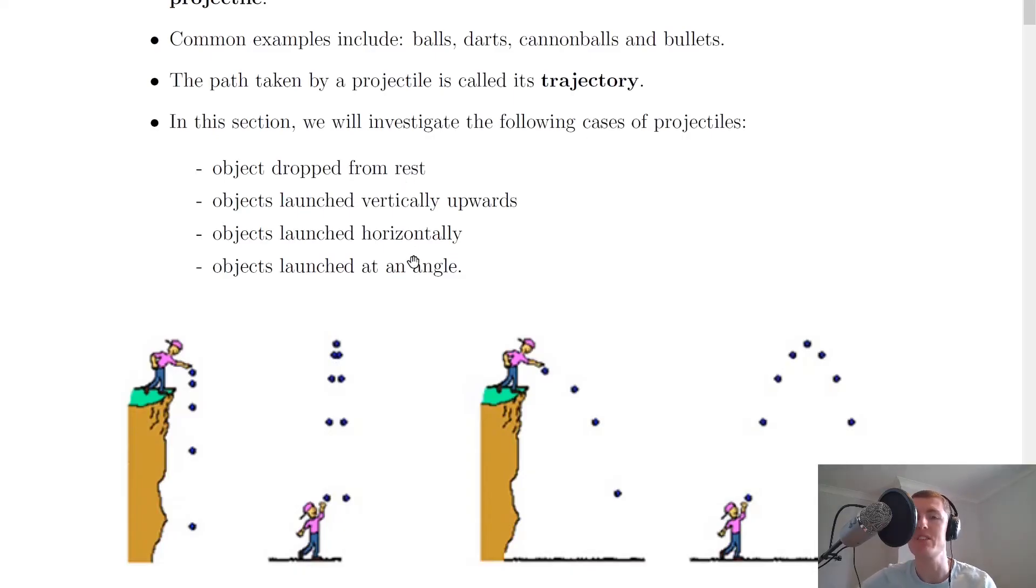So there's four different cases that we will look at. These are objects that are dropped from rest, objects that are launched vertically upwards, objects that are launched horizontally and objects that are launched at an angle. And it's really this last one that is the one that you've not seen before. We have seen these other ones before at National 5 level.